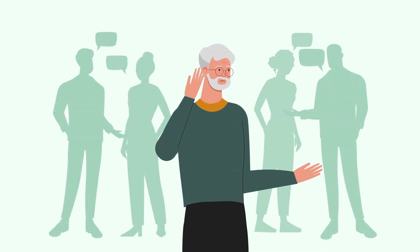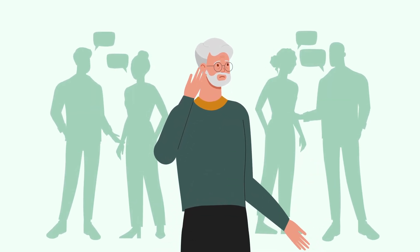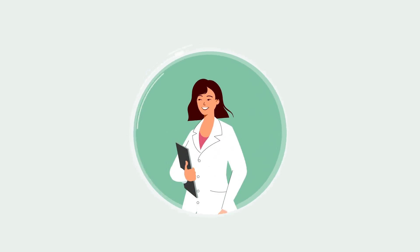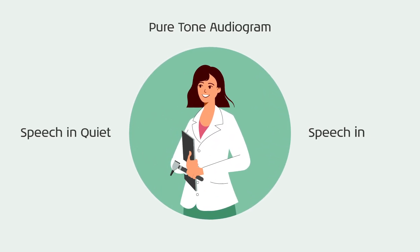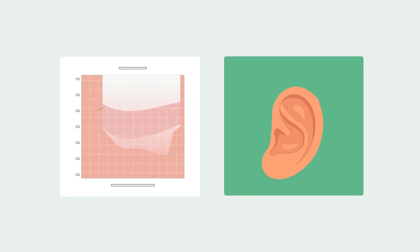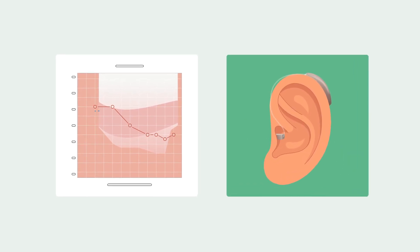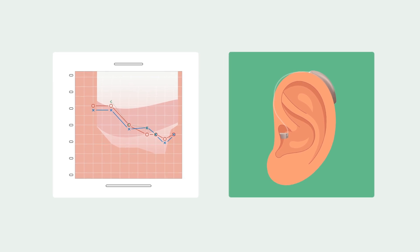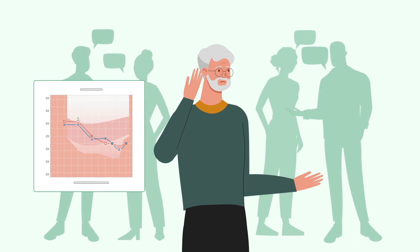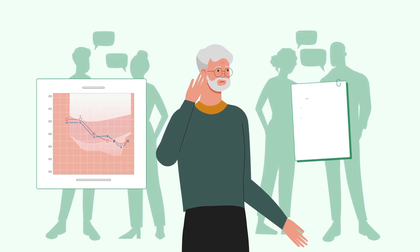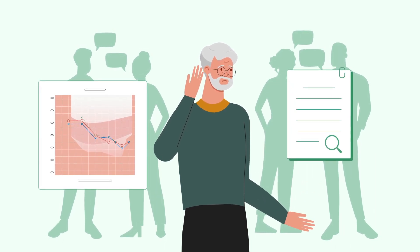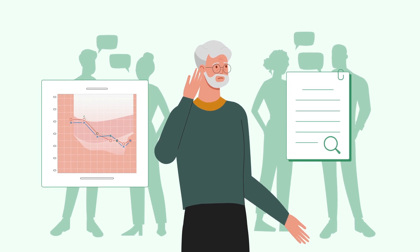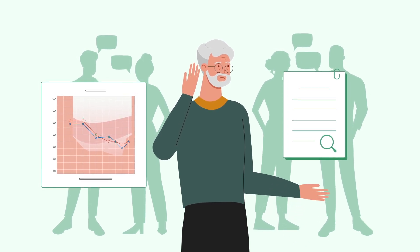The number one complaint of people with a hearing loss is hearing in noise. As hearing care professionals, we have developed tools to assess this challenge. The first tool in our toolbox is the Pure Tone Audiogram. It defines the quantity of hearing and we use the results to set the gain characteristics of hearing aids. Although it is an essential part of any audiological assessment, it has been shown time and time again that the Pure Tone Audiogram is a poor predictor of how well a patient will hear in noise.